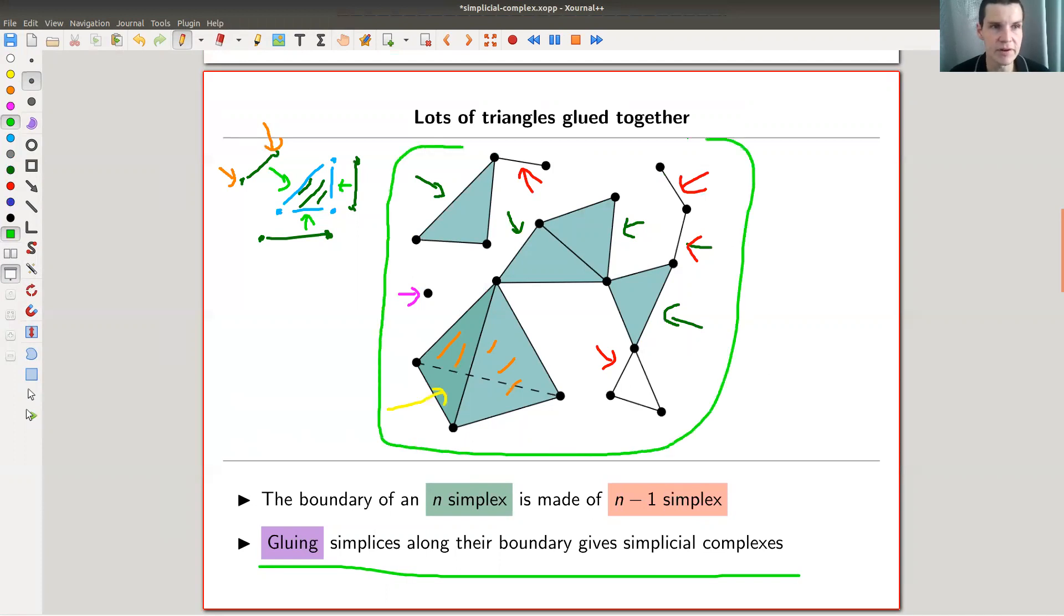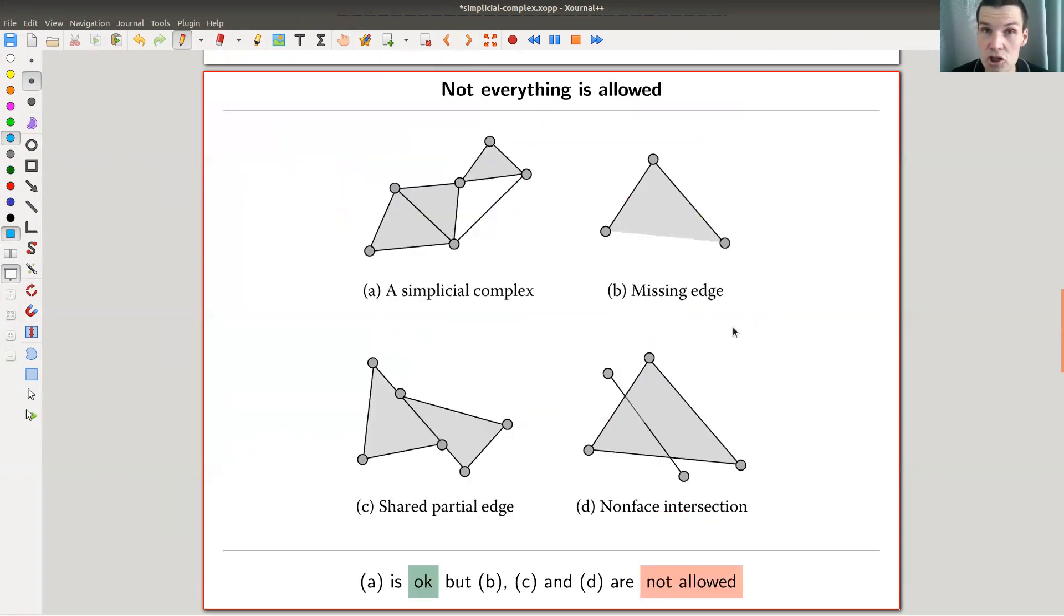And the idea of a simplicial complex is that you just glue about those triangles along that boundary, as is done here in this example. So this is a really good example of a simplicial complex. So all triangles are glued together along a common boundary, like this one here. Those two here are glued together along this common boundary.